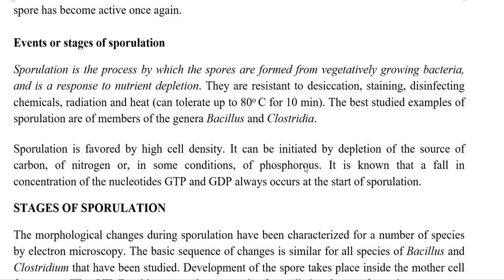Sporulation is also favored by high cell density and can be initiated by depletion of sources of carbon, nitrogen, or under some conditions the depletion of phosphorus can also initiate sporulation. It is well known that a fall in the concentration of the nucleotide GTP is always associated with the start of sporulation.